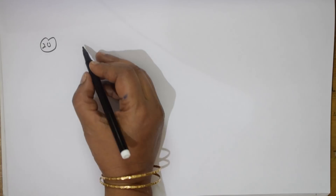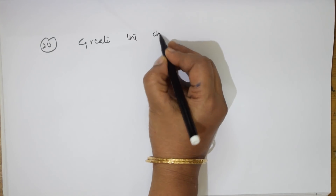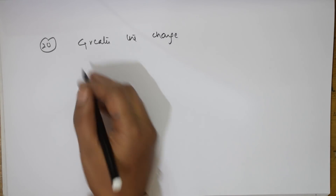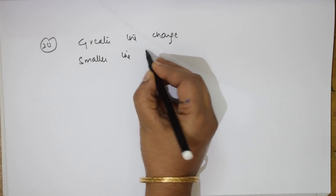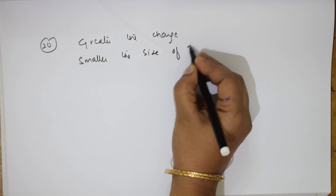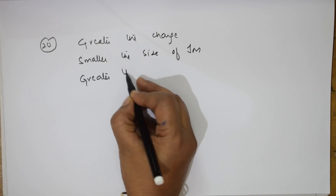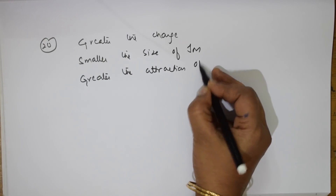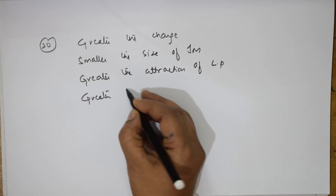The 20th concept, again relating to hydration enthalpy: greater the charge and smaller the size of the ion, greater the attraction of the bonded pair, and therefore greater will be the hydration enthalpy.